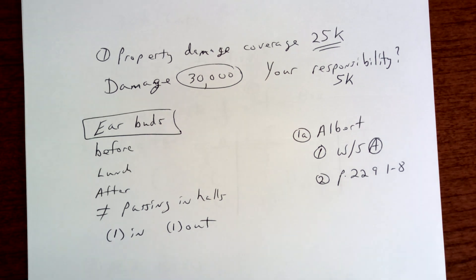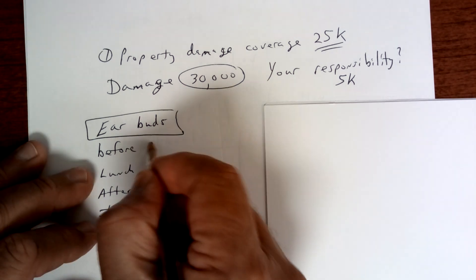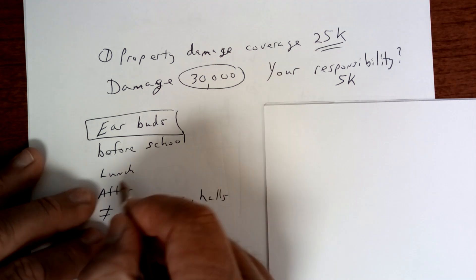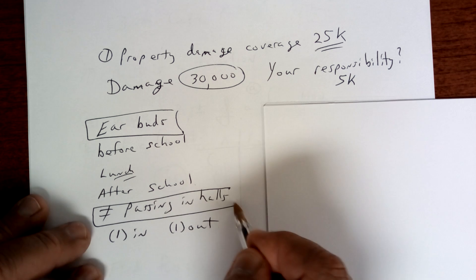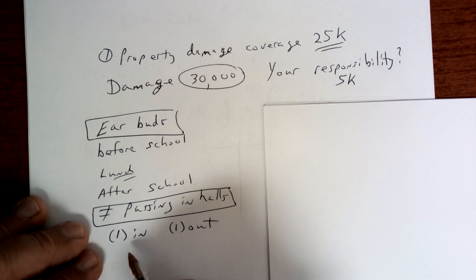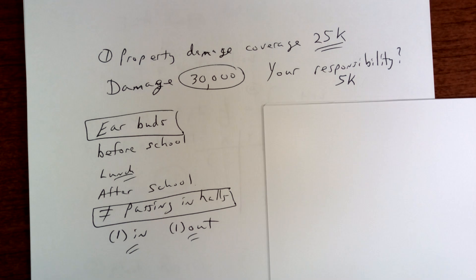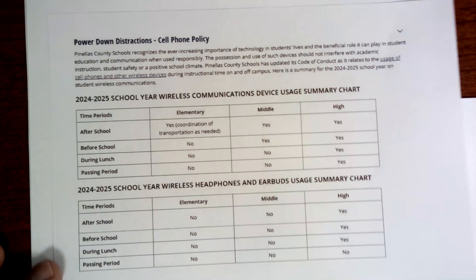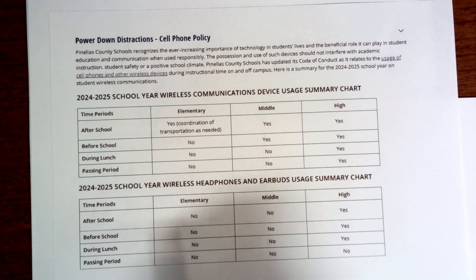Earbuds can only be worn before school, at lunch, or after school — not in the hallways. When you wear earbuds or headphones, one must be in and one must be out, so you have to keep one ear exposed. Take a look at this chart: after school — middle and elementary no, high school yes.